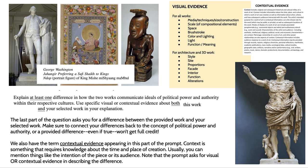The last part of the question asks for a difference between the provided work and your selected work. You really need to connect the differences back to the concept of political power and authority. Even if something you provide is technically true, it might not be significant within that context. For example, if I'm comparing Augustus and an ndop portrait figure — yes, Augustus is made of marble and the ndop is made of wood — but how does that convey anything about notions of power in these societies? Be very specific and targeted with your identified difference.